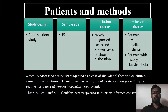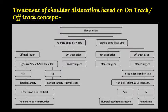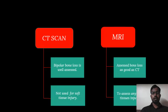Our study was a cross-sectional study with a sample size of 15 patients. The inclusion criteria included newly diagnosed cases and known cases of shoulder dislocation. The exclusion criteria were any patients having metallic implants or any patients having a history of claustrophobia for doing an MRI scan. Both CT and MRI were done, as CT is better for assessing bipolar bone loss and MRI is good for identifying associated soft tissue injury and antero-inferior labral injury.